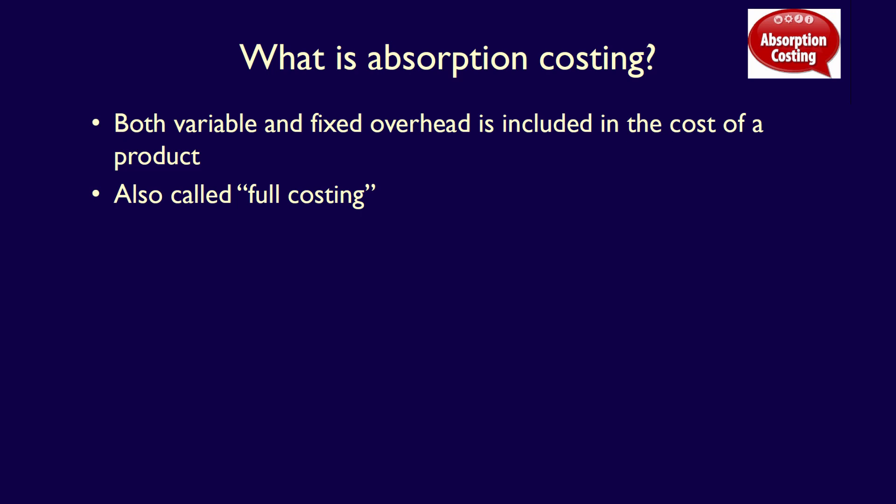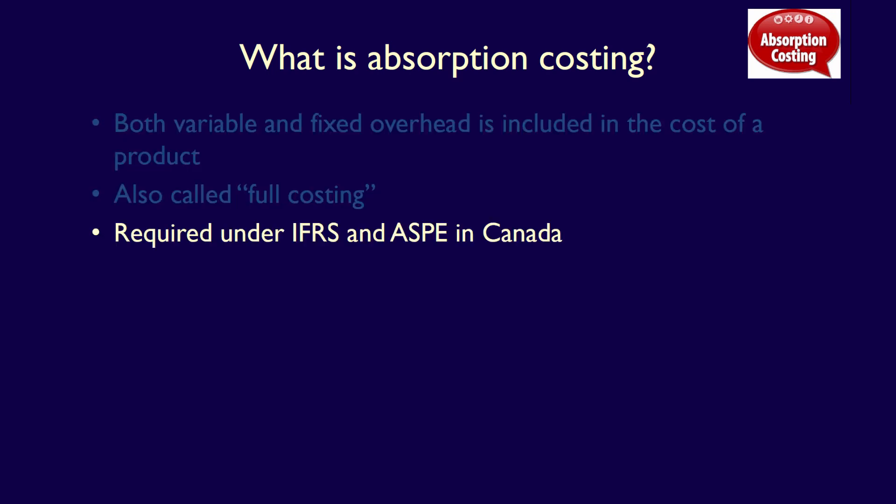Both fixed and variable manufacturing overhead are treated as inventoriable product costs. Absorption costing is required under both IFRS, International Financial Reporting Standards, and ASPE, Accounting Standards for Private Enterprises — well, in Canada, that is. You would be familiar with absorption costing, as we've already used it in job order costing — we just didn't call it that.